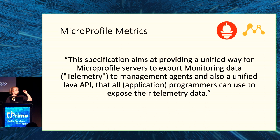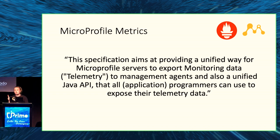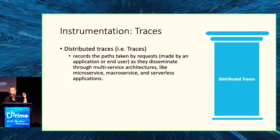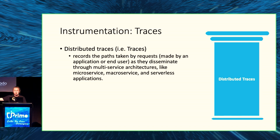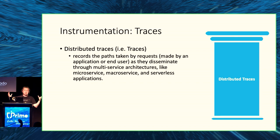Metrics give us greater insight into how our application is behaving over a period of time. However, they don't give us insight into how our microservices are integrating together. If a request goes through multiple microservices, how do we know where the root cause is if something goes wrong? How do we know our microservices are working well together in a distributed environment? This is where traces can be really helpful — specifically distributed traces.